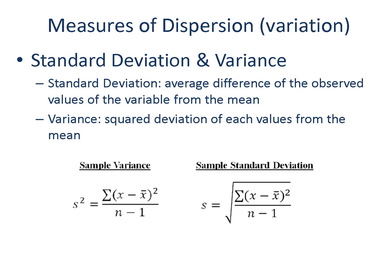Another often-used statistic to describe the dispersion of a variable is standard deviation and variance. We are not going to go over the equations here, but the basic idea is that standard deviation captures the average difference of the observed values from the mean. Variance is a byproduct of calculating standard deviation. Just remember that variance captures how on average each value deviates from the mean.